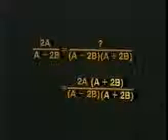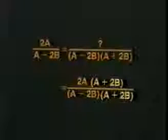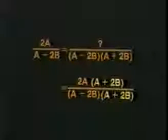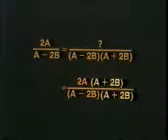Immediately, I look for the key: how did I get from the old denominator to the new denominator? What did I multiply by? The answer: a plus 2b. So I multiply the numerator also by a plus 2b, and the result is a fraction entirely equivalent to the one we started with. But now it has the denominator we were looking for.